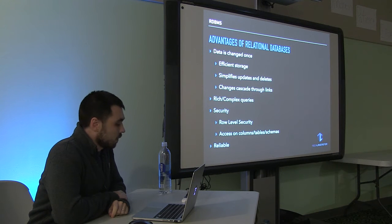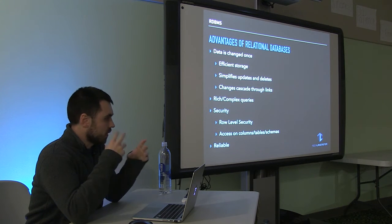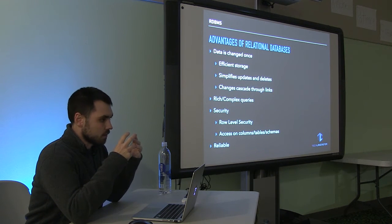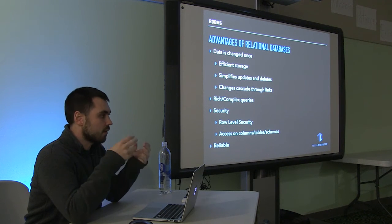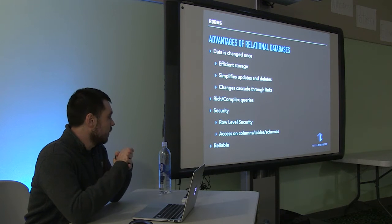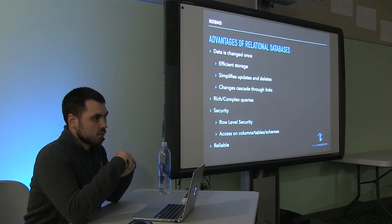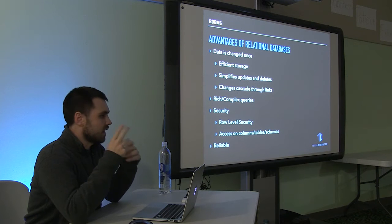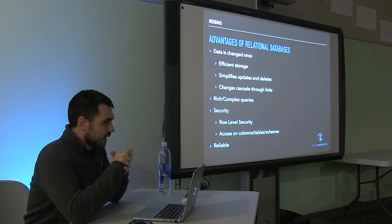Relational databases offer a lot of built-in security. You can do really nice nested hierarchies of roles — what people are allowed to do within the database. It gets even finer with row-level security, where you can define what rows people have access to, what kind of access you need to get data out of certain columns, tables, and schemas. And because it follows ACID properties, it's reliable.